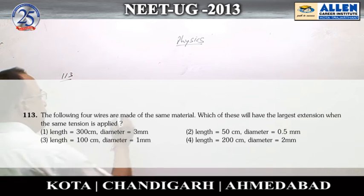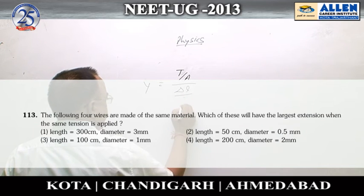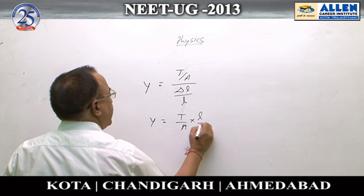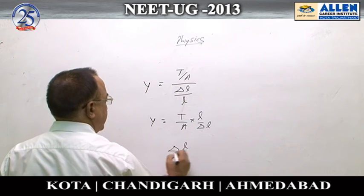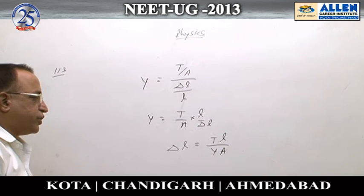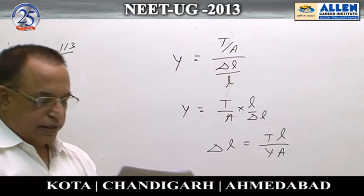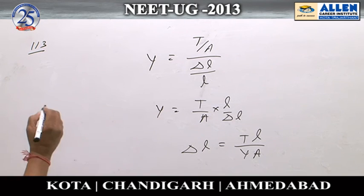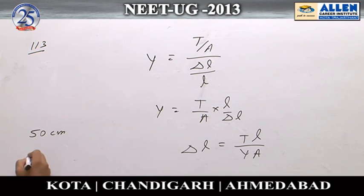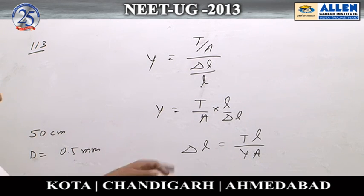This problem is related to elasticity. Young's modulus Y = (T/A) / (ΔL/L), so ΔL = TL / (Y·A). Naturally, extension depends upon length and is inversely proportional to cross-sectional area. To get the answer, we put different values of L and A into the relation and observe that option number 2 — in which length is 50 centimeters and diameter is 0.5 mm — gives the maximum extension. Hence option number 2 is the correct option.